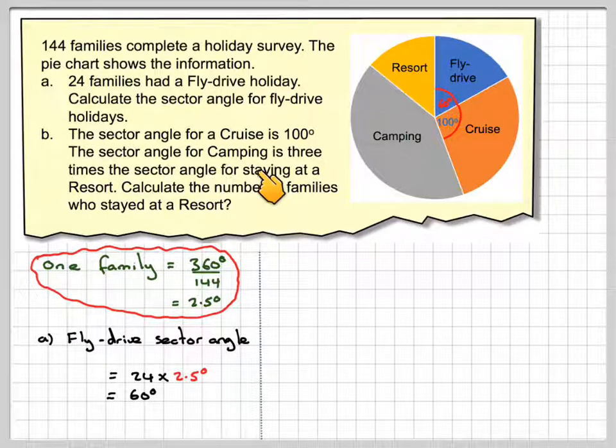The sector angle for a cruise is 100 degrees. The sector angle for camping is 3 times the sector angle for staying at a resort. Calculate the number of families who stayed at a resort.